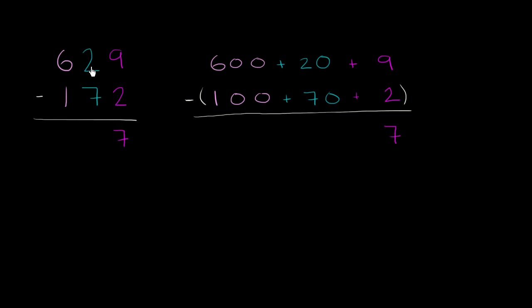Luckily, we have something in our toolkit called regrouping, sometimes called borrowing. And that's why this is valuable. When we're trying to subtract the 7 from a 2, we're really trying to subtract this 70 from this 20. We can't subtract the 70 from the 20, but we have other value in the number. We have value in the hundreds place.